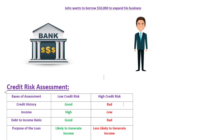However, if John is at high credit risk — meaning he has a bad credit repayment history, poor income, a poor debt-to-income ratio, and an investment less likely to generate enough income to repay the loan — you may either reject his loan application or offer him less favorable terms, such as a higher interest rate or a shorter repayment period.